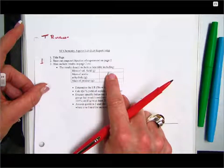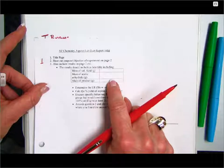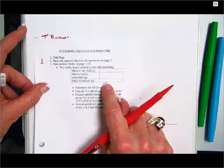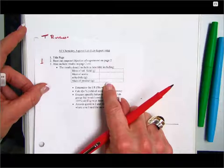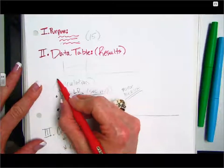Where you indicate the mass of the salicylic acid used, the mass of acetic anhydride, and the mass of your product. So this is your grams actual. Underneath your data table you're going to show any calculations.